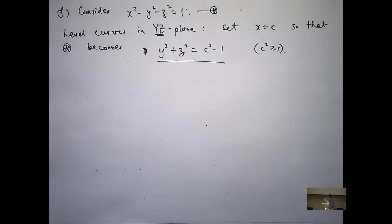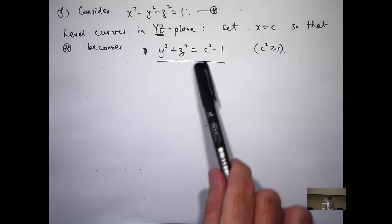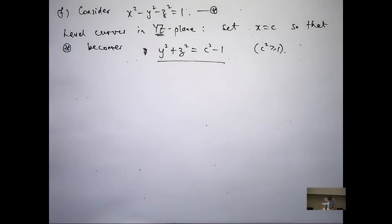So assuming that we choose c large and positive or large and negative, what is the underlying form? What's the curve of this underlying equation going to be in the y-z plane? Does it look familiar? Circle, right. Assuming c squared is large enough, this is going to be a circle.